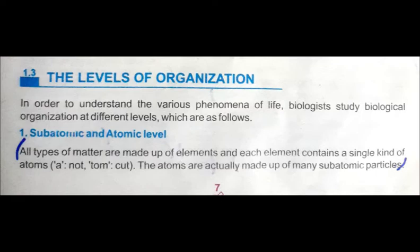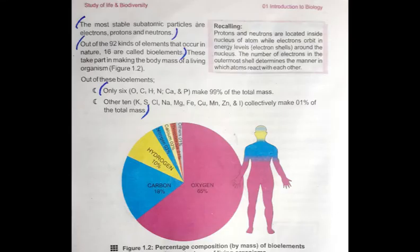The most stable sub-atomic particles are electrons, protons, and neutrons. Protons and neutrons are present in the nucleus of the atom, and electrons are revolving around the nucleus. So the most stable sub-atomic particles are electrons, protons, and neutrons.